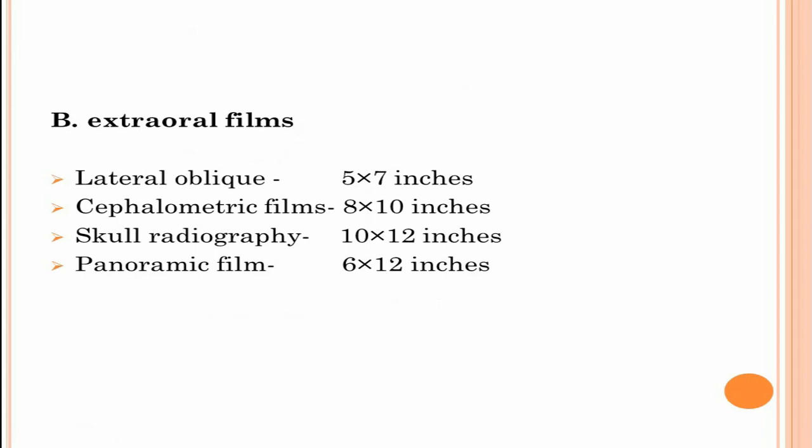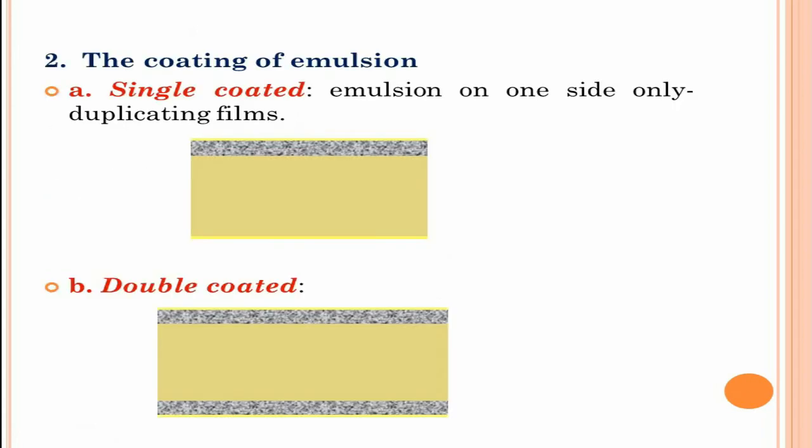Based on coating of emulsion, they can be classified into single-coated and double-coated films. Single-coated films have emulsion only on one side and produce better, sharper images but patient exposure is more. They are mostly used in industrial radiography and duplicating films. Double-coated films have emulsion on both sides. Most dental films are double-coated and allow less exposure to the patient.